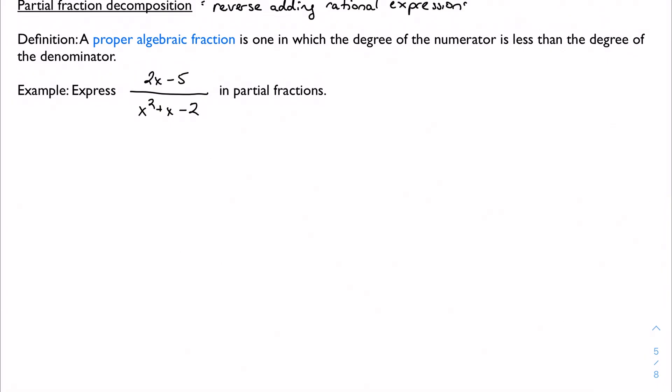And for now we're going to deal with what our book calls a proper algebraic fraction. This is one in which the degree of the numerator is less than the degree of the denominator. This is no different than when we used to talk about proper fractions in elementary school, right, where something like two-thirds is proper, but five-fourths is not because the numerator is greater than the denominator.